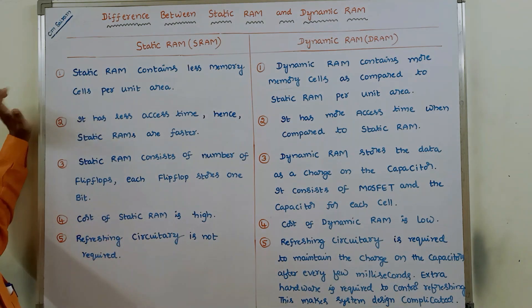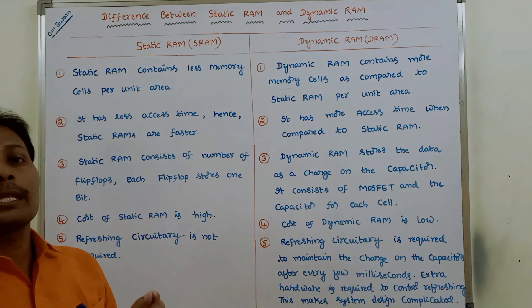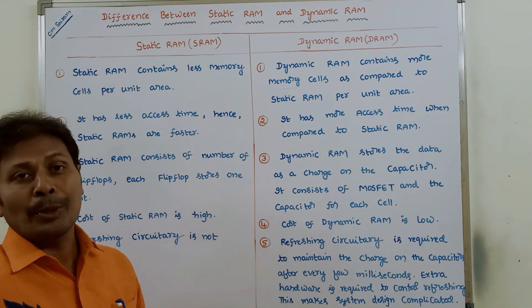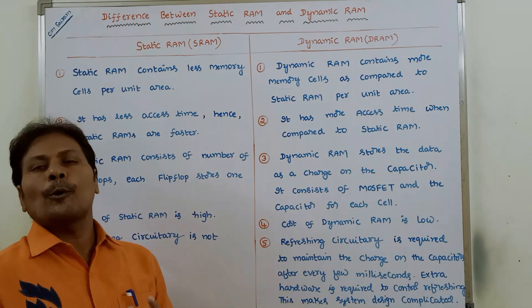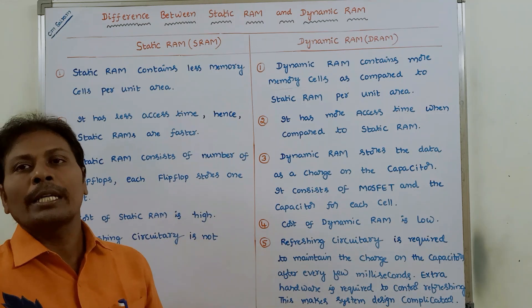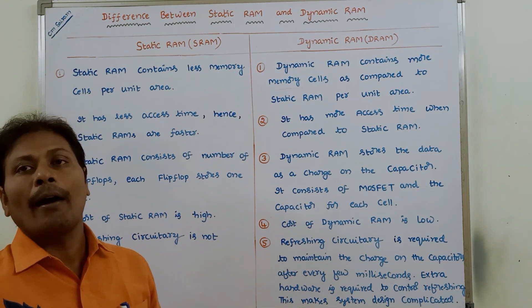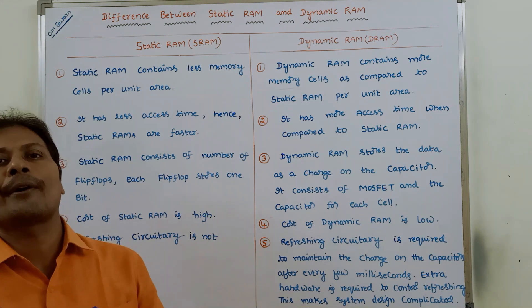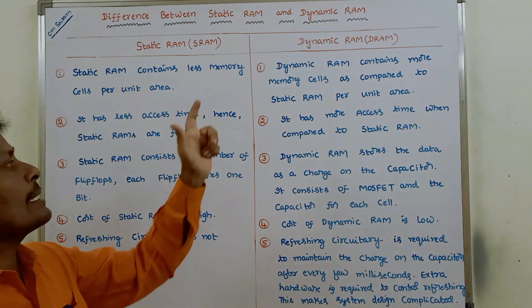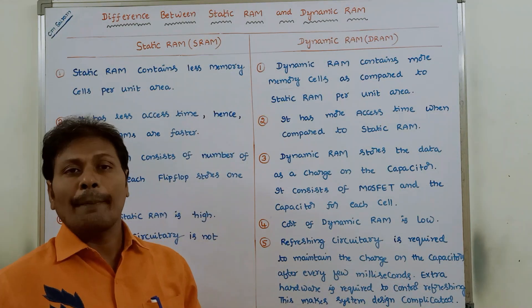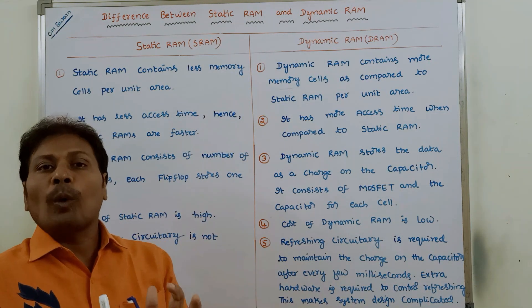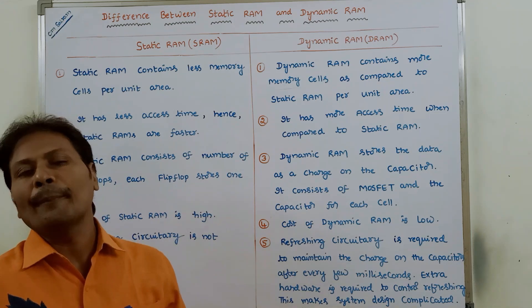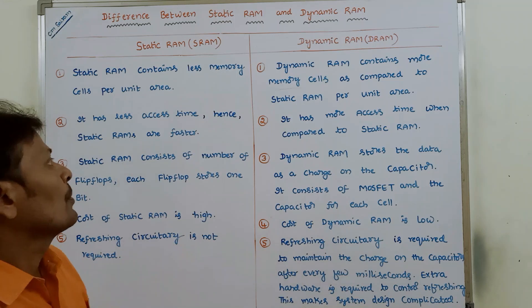The first difference: static RAM contains fewer cells per unit area. If we take one unit area, static RAM contains very few memory cells. Whereas in the case of dynamic RAM, within one unit area, dynamic RAM contains a greater number of memory cells.